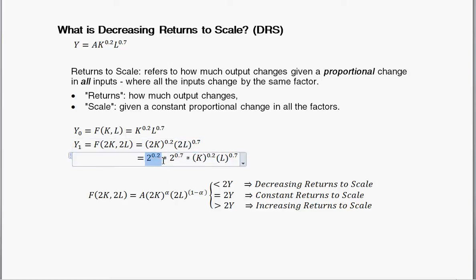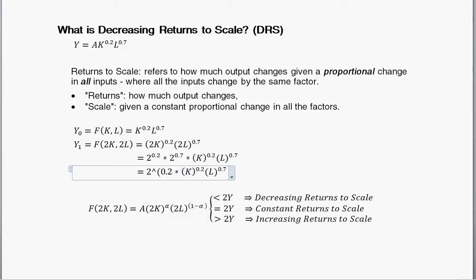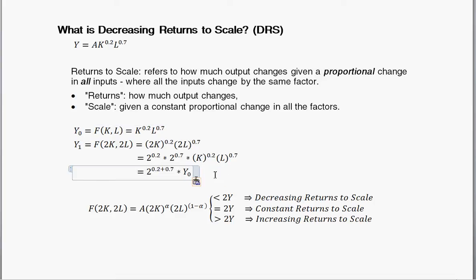So we have 2 raised to the 0.2, times 2 raised to the 0.7. When we have the same base term, we combine them by adding the exponents, so it's going to be 2 raised to the 0.2 plus 0.7. Also note that K raised to the 0.2 times L raised to the 0.7 is exactly our initial level of output, so I can replace that term with Y-sub-0. Now finishing the simplification: 0.2 plus 0.7 equals 0.9.